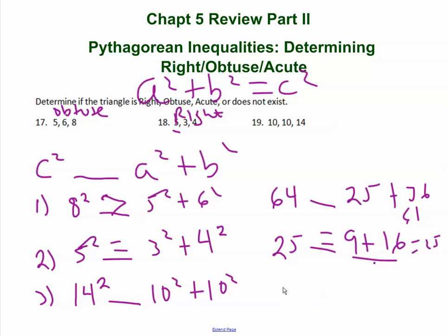And so we have 196 blank 100 plus 100. Alright, that is less than, and this guy is acute. I did that on purpose so I could have one of each example.